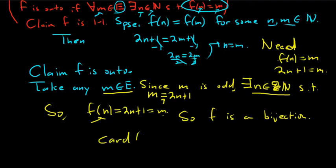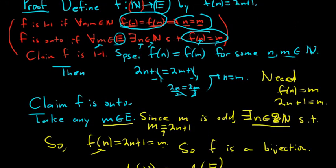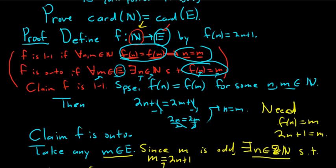So f is one-to-one and onto, meaning f is a bijection. This shows the two sets have the same cardinality. To show two sets have the same cardinality, all you have to do is produce a bijection: define a function, show it's one-to-one, and show it's onto.